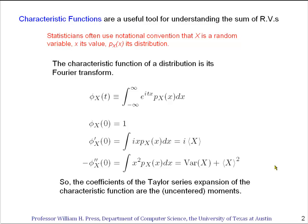So you can keep repeating this and you'll see that the coefficients of the Taylor series expansion of the characteristic function, that is to say the successive derivatives evaluated at zero, are except for some factors of i and maybe some factorials that are going to come in, equal to the uncentered moments.